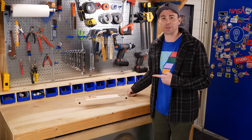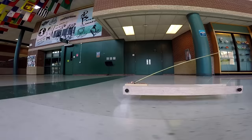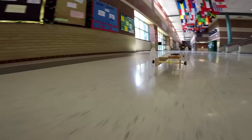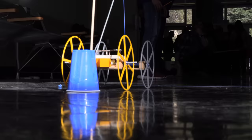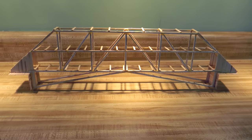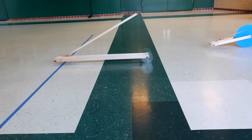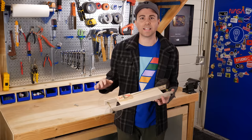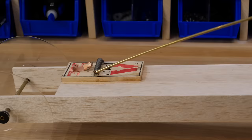This is a mousetrap car. They're common for competitions in high school physics classes, just like the egg drop challenge or building toothpick bridges. The goal is to build a car that travels the furthest or goes the fastest, but in either case, the only power provided to move the car is from a single mousetrap.